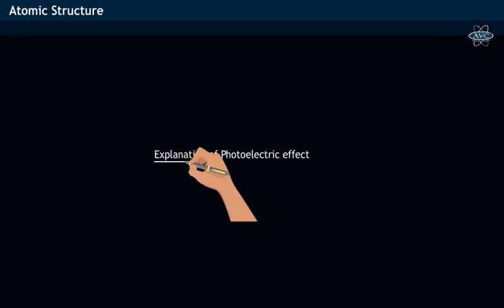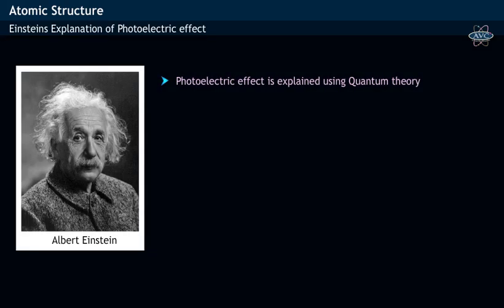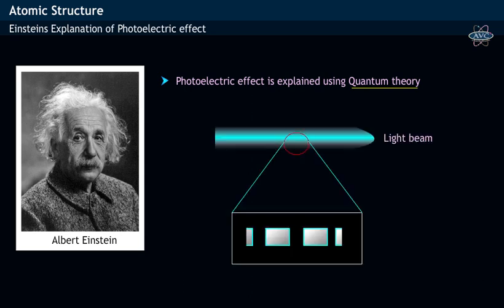Let us provide explanation for photoelectric effect. Einstein explained photoelectric effect based on quantum theory. According to Einstein, light beam consists of particles called photons having a specific energy of h nu.